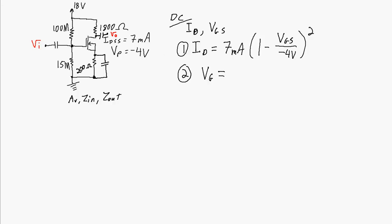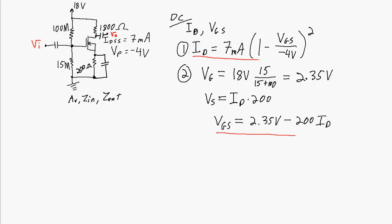My second equation is going to be made from the circuit. VG, the voltage at this point - no current flows into the gate, so this is just a voltage divider. 18 volts is divided between this 100 megaohm and 15 megaohm resistor. So VG equals 18 volts times 15 over 115, which works out to 2.35 volts. VS is the voltage at this point with respect to ground, equal to ID times 200 ohms. Therefore VGS equals VG, 2.35 volts, minus VS, which is 200 ID.